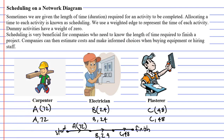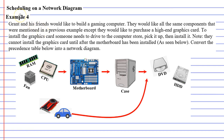Let's get into Example 4 now. Example 4 is one we've completed in an earlier video, except we've changed it a little to make it harder. It says that Grant and his friends would like to build a gaming computer with all the same components from the previous example, except they would like to purchase a high-end graphics card. To install the graphics card, someone needs to drive to the computer store, pick it up, then install it.